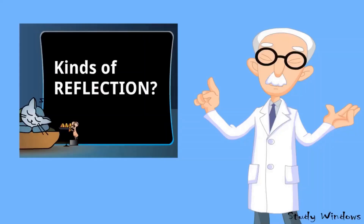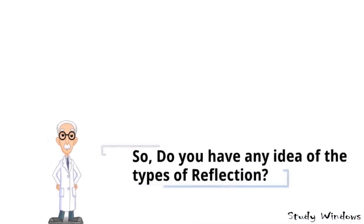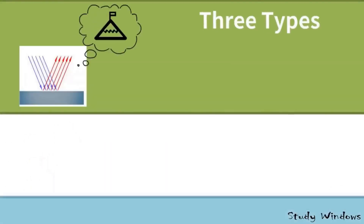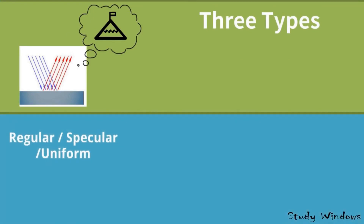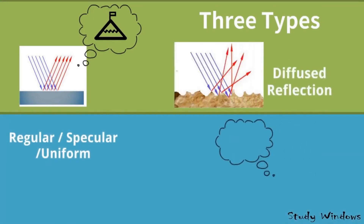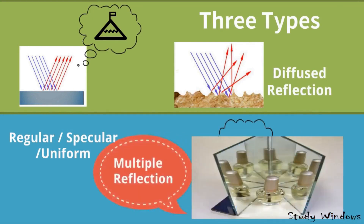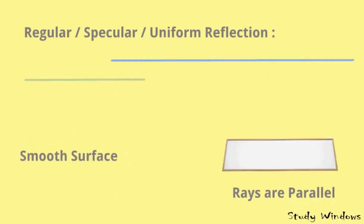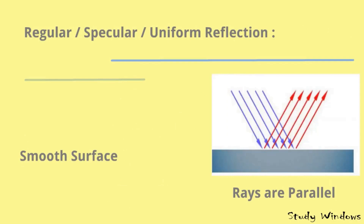Kinds of reflection — do you have any idea of the types of reflections? There are three types: regular or specular or uniform reflection, diffused reflection, and multiple reflection. In regular or specular or uniform reflection, all the parallel incident rays are reflected in parallel only. The surface is very smooth and the reflected rays are parallel.